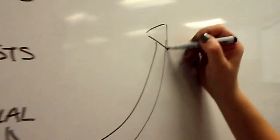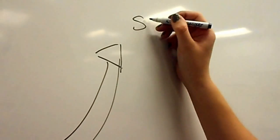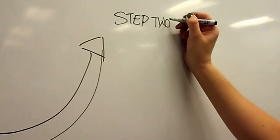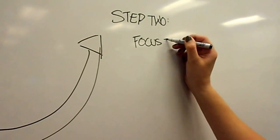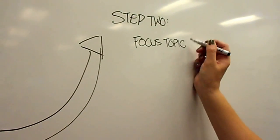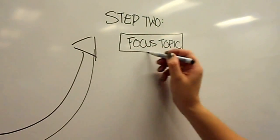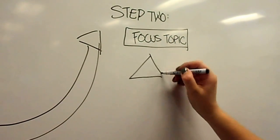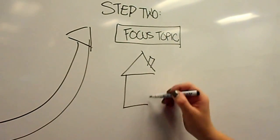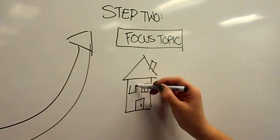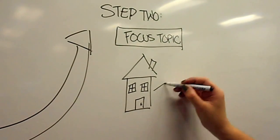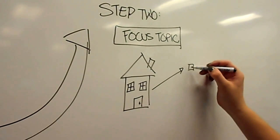Step 2 would be to dissect this broad field that you have selected. Break down your topic into sub-areas. Again, you should select what is interesting to you.